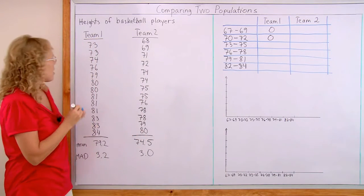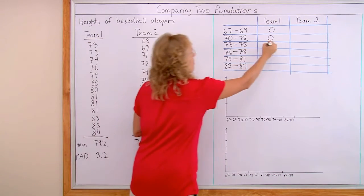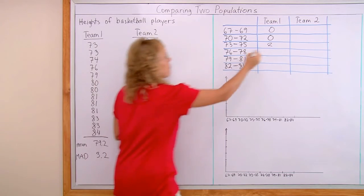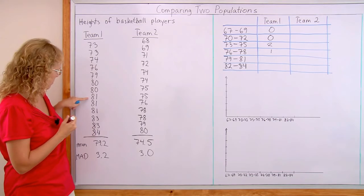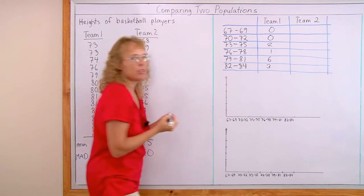73 to 75, we have two. 76 to 78, that's just one. And then 79 to 81, 6 and then 3. And then 14, 2.